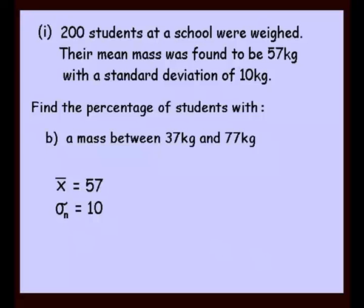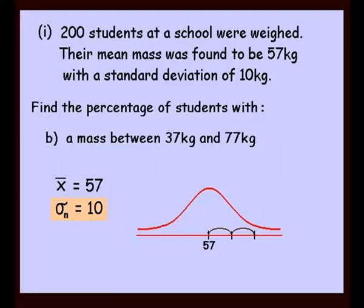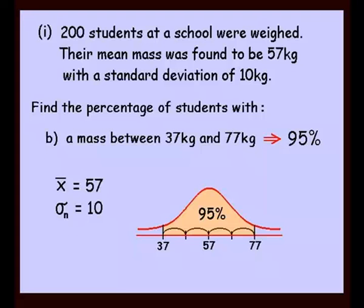Next question: find the percentage of students with a mass between 37 and 77 kilos. Drawing a new bell curve with mean 57 in the middle, standard deviation 10. Going up twice gives 77, going down two lots of 10 gives 37. That corresponds with two standard deviations either way, which indicates our 95% result. So 95% of students would have a mass somewhere between 37 and 77 kilos.